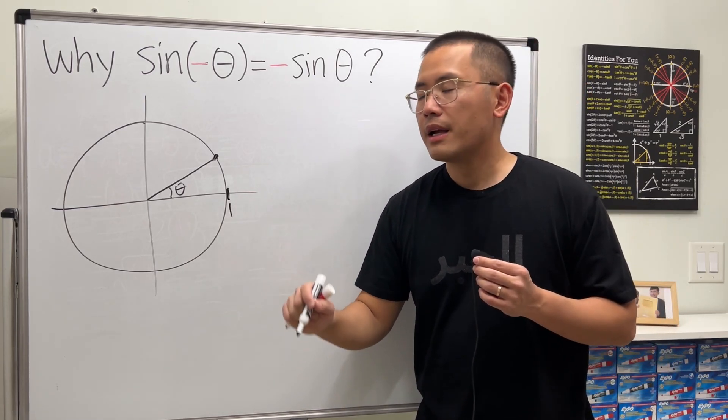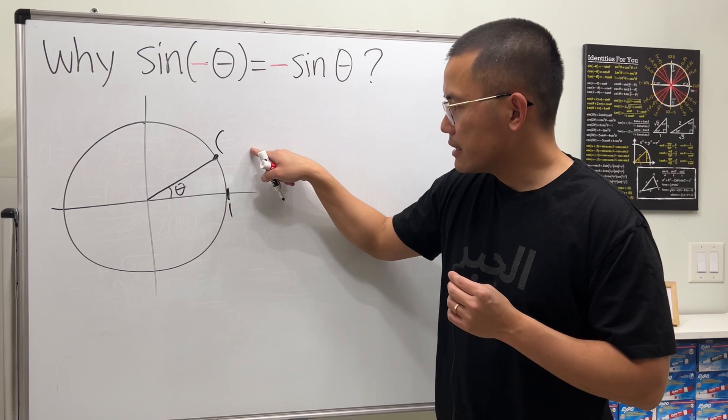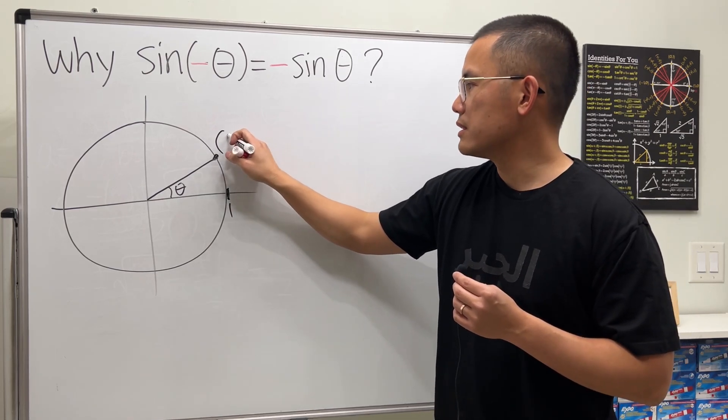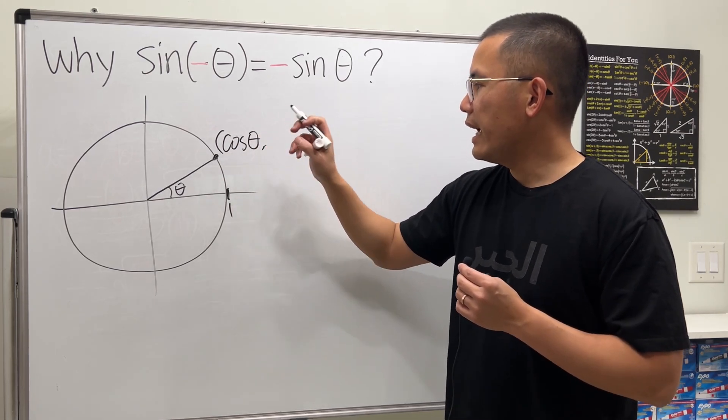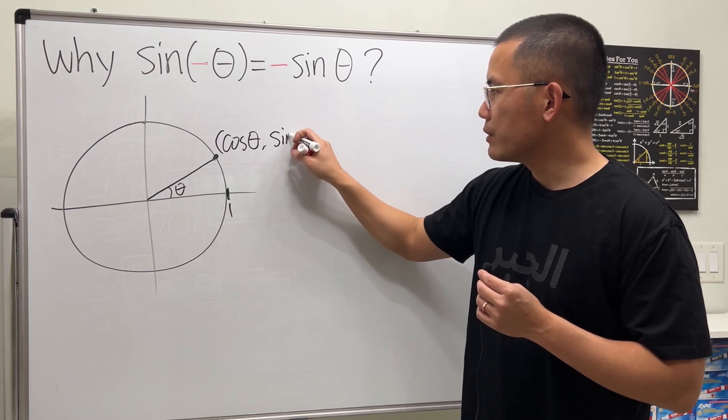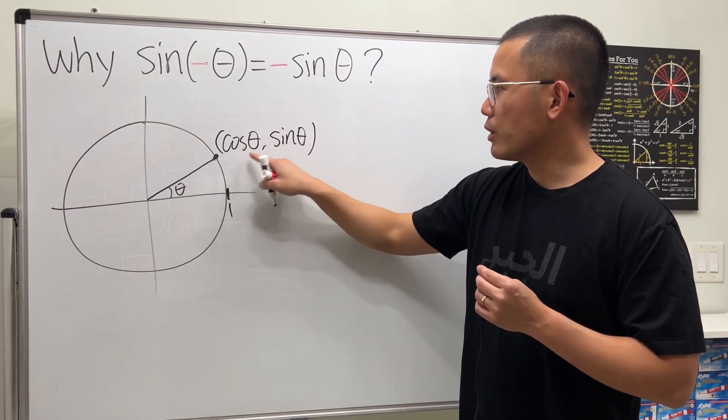Now, on the unit circle, the x is the cosine value. So this is cosine theta. And the y is the sine value. Alright, x is cosine, y is sine.